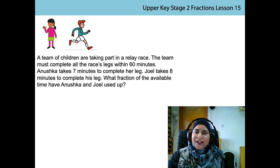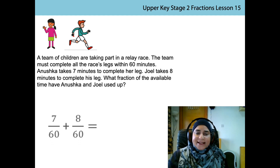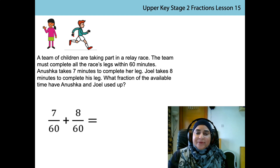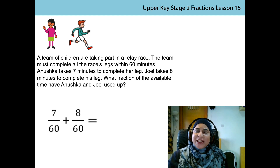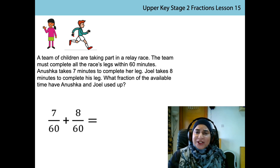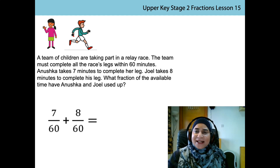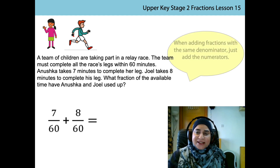Pause the video and jot down an equation to represent the story. Seven sixtieths represents the time Anushka took to run her leg. Eight sixtieths represents the time Joel took to run his leg. When adding fractions with the same denominator, just add the numerators. So the sum is 15 sixtieths.